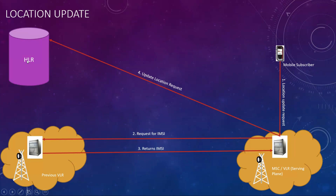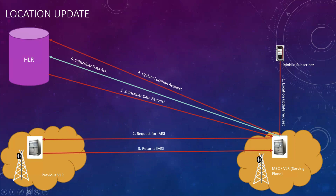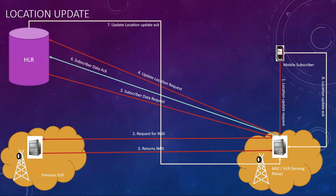The dynamic database stores things that change based on your requirement, like VAS services or ringtone subscriptions. As soon as the update location is requested by the visiting serving plane, HLR gives the subscriber data — whether you are a prepaid or postpaid subscriber, how much call duration you can use, what services you can avail, and what barring services are present on your SIM profile. All that subscriber data is given to the Visited Location Registry. Once the VLR receives it from HLR, it sends an acknowledgment back to HLR confirming receipt.